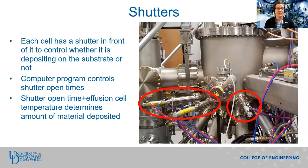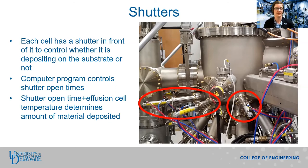An effusion cell has a shutter in front of it to control its deposition. As soon as we heat up the effusion cell, it starts evaporating material. So we use the shutters to control whether or not a particular material is being deposited on a substrate at any specific time. The shutters allow us to grow layered structures with sharp interfaces between the layers. We use a computer program to control the shutter opening and closing times, and the duration of the shutter open time plus the effusion cell temperature determines how much material is deposited.